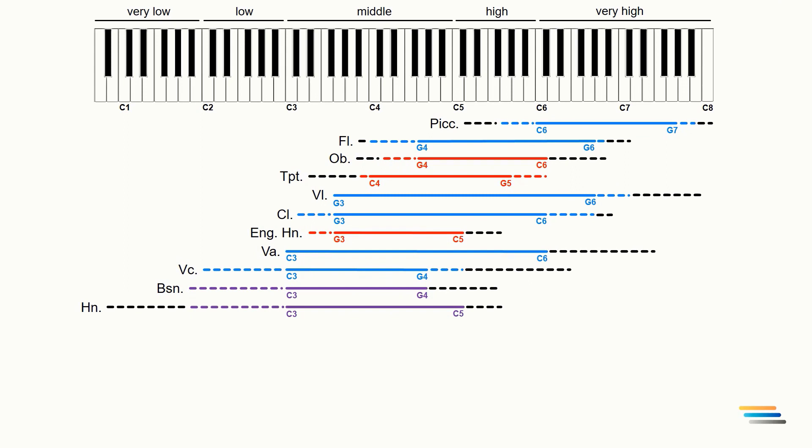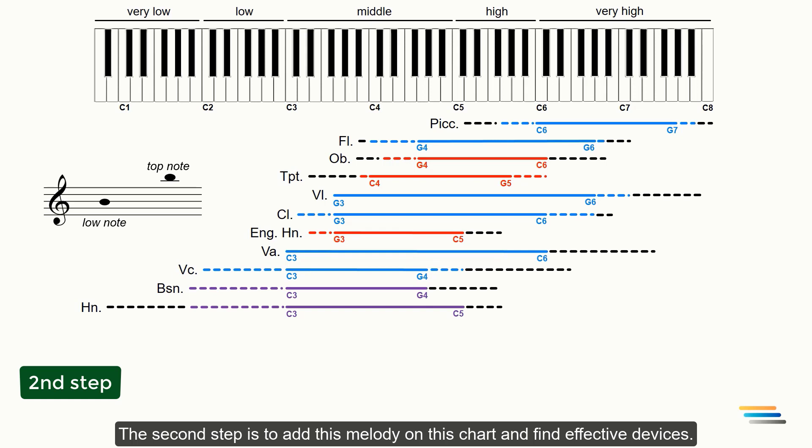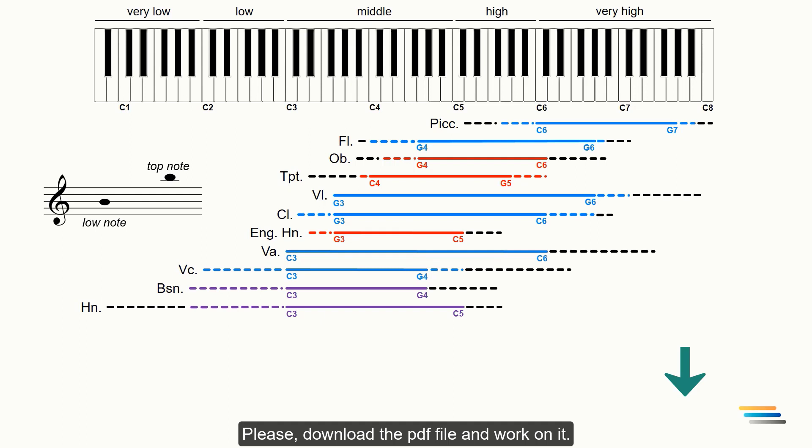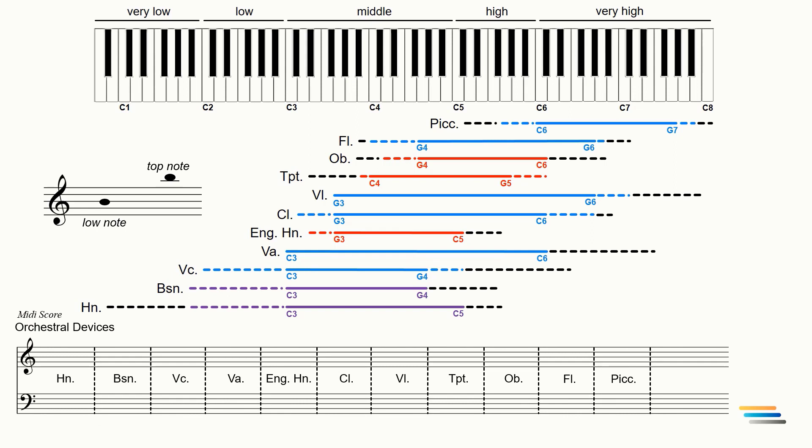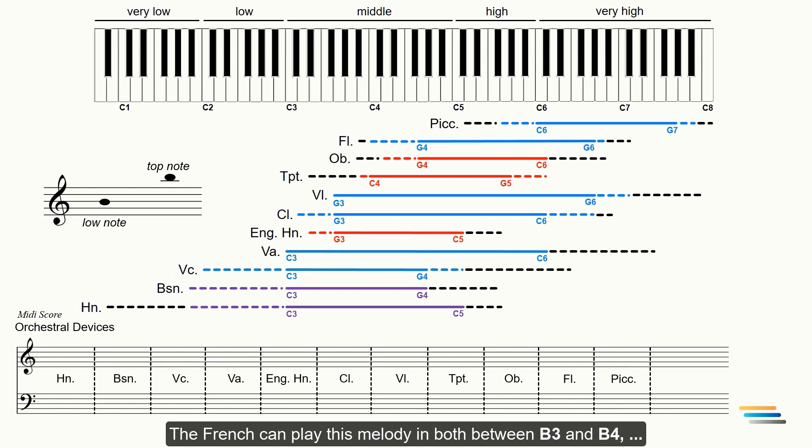The second step is to add this melody on this chart and find effective devices. Please download the PDF file and work on it. Let's start with the French horn. I'm looking for where the horn can play this melody. The French horn can play this melody both between B3 and B4 and between B2 and B3 as they will be on the effective range of the instrument.